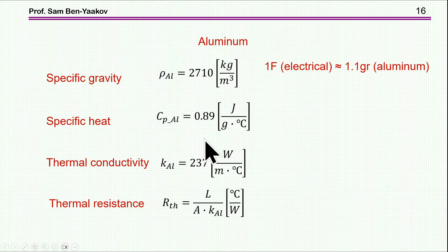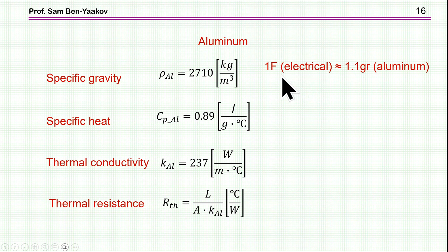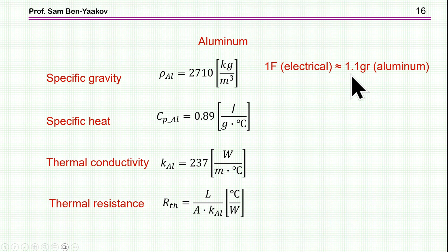Here are some basic material properties of aluminum: specific gravity, specific heat, thermal conductivity, and thermal resistance. From these you can derive an important rule of thumb for getting a feel for the heatsink you are choosing — the relationship between electrical capacitance and the weight of the aluminum. What we find is that 1 farad equals approximately 1.1 grams of heatsink.